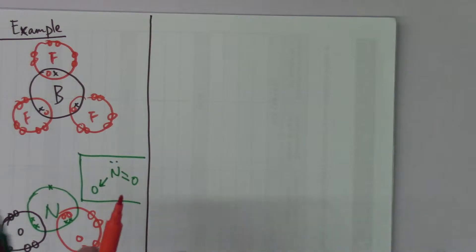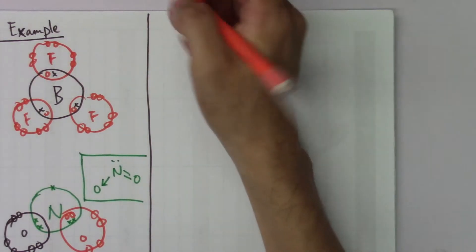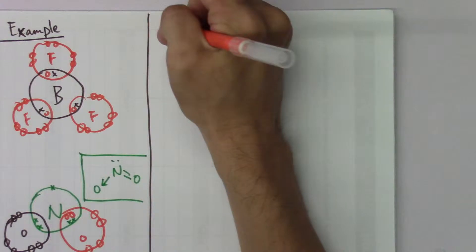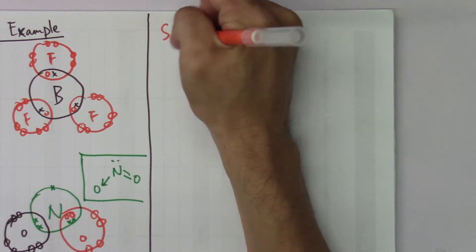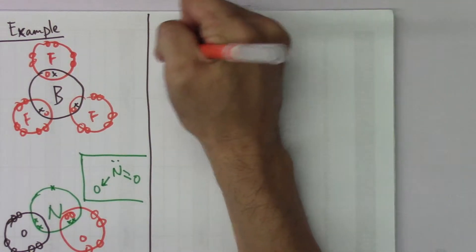Nitrogen gives a dative covalent bond to the nearby oxygen. After discussing the non-octet structures that are less than octet, let's look at another case of non-octet — a compound called SO2.